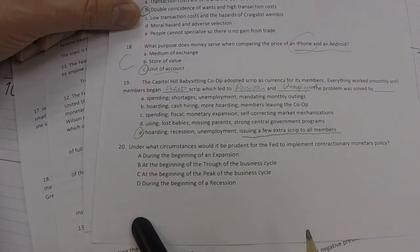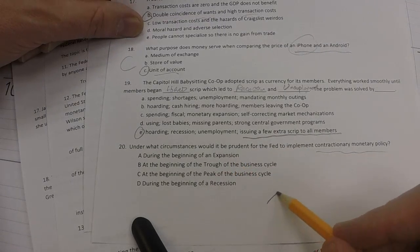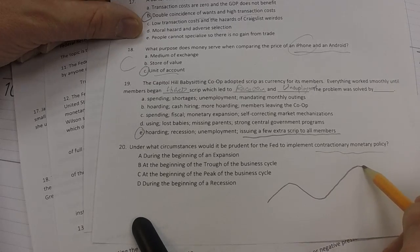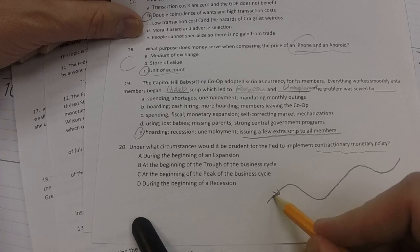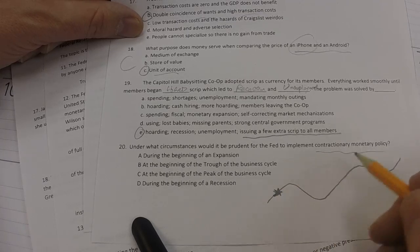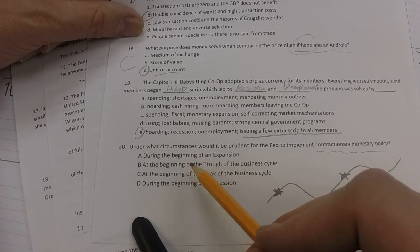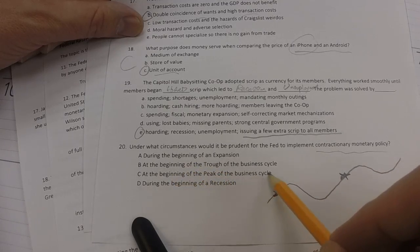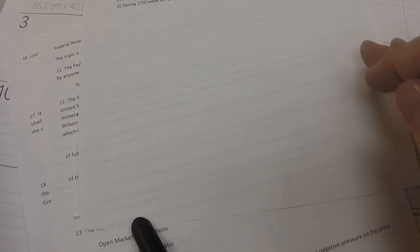And number 20. Under what circumstances would it be prudent for the Fed to implement contractionary monetary policy? So, here we are with the business cycle. We know that if they had implemented contractionary monetary policy here or here, that would have been appropriate. So, we could say it's the beginning of the peak of the business cycle would be a good answer. Now, we look for 21.